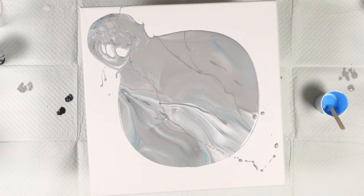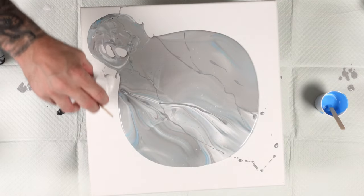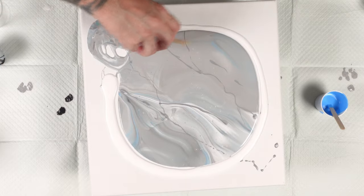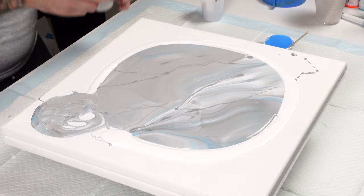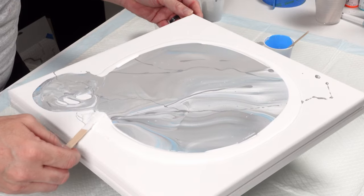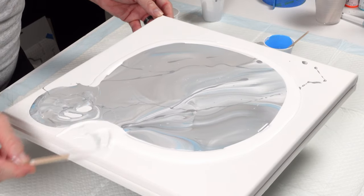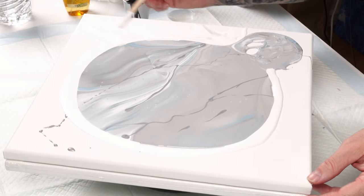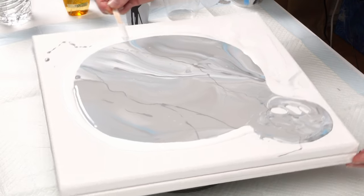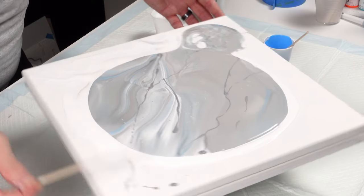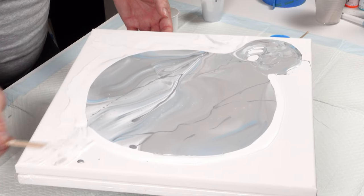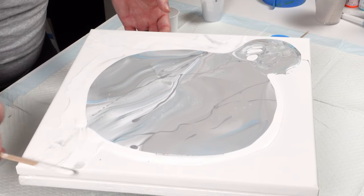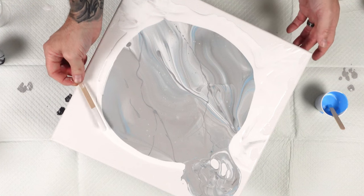I'm going to take what's left of the little bit of white we got. Go around this edge here. I have some more white mixed up, so if I need to use it, I will. I'm just giving the paint somewhere to flow to.